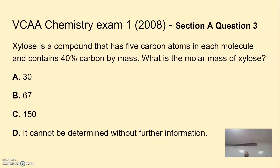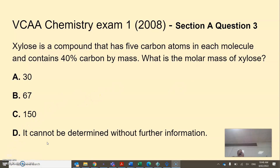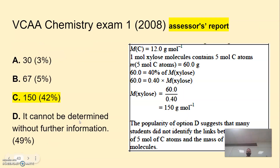Let's look at an exam question on xylose, which has appeared in a couple of exams. The compound has five carbon atoms per molecule and contains 40% carbon by mass — what is the molar mass of xylose? Five carbons have a mass of 60 g/mol. Since that represents 40% of the total mass, we divide 60 by 0.4, giving a molar mass of 150 g/mol.